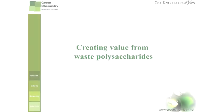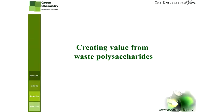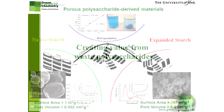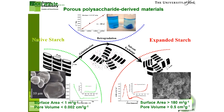Let me spend a little time giving you some examples of where we are taking low-value waste-type feedstocks and turning them into useful products. We start off with one of my favorite areas, where Vanya, who's coming to join us next year, is going to be working with us, and that's on the use of waste polysaccharides — in particular, to take waste polysaccharides and make porous solids.